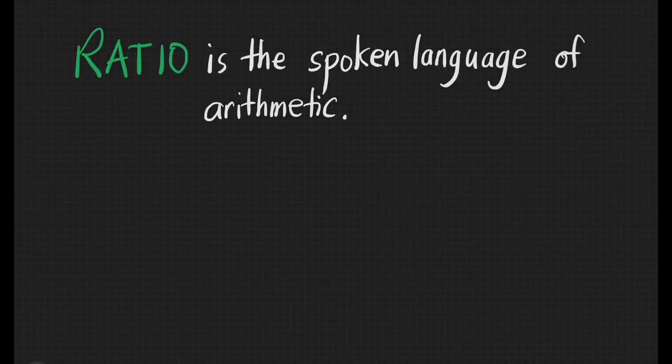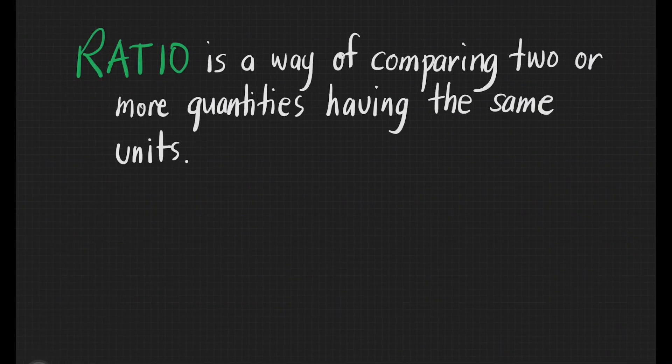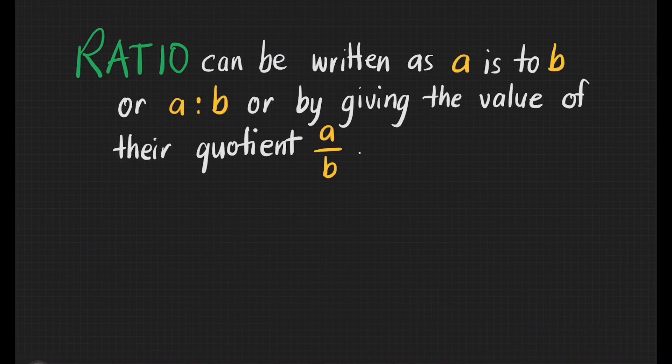Ratio is a spoken language of arithmetic. It is a way of comparing two or more quantities having the same units. It can be written as A is to B, or by giving the value of their quotient A over B, or A divided by B.